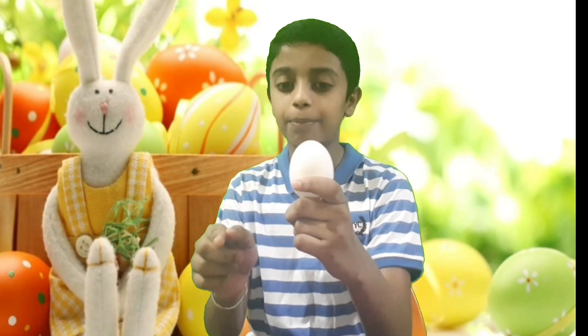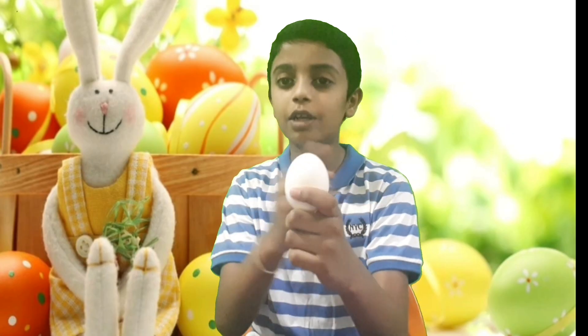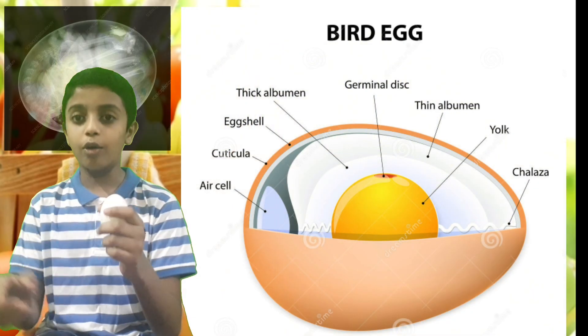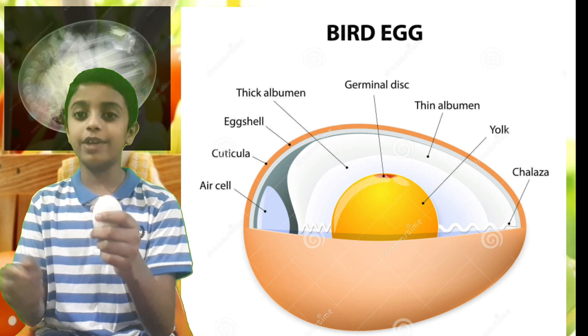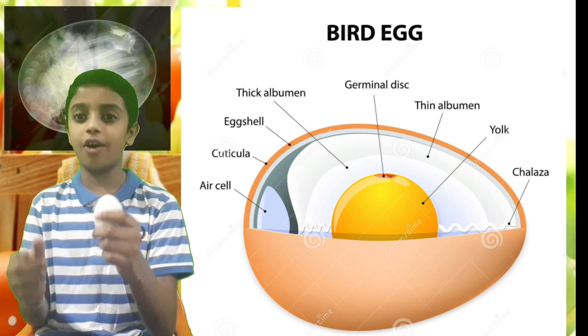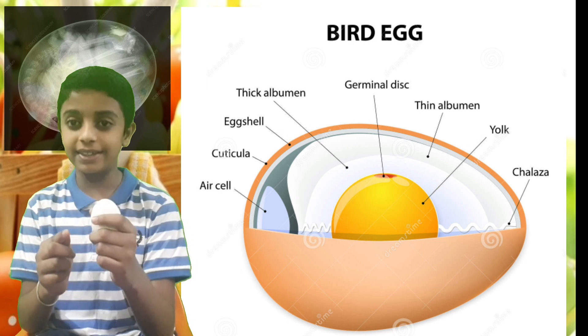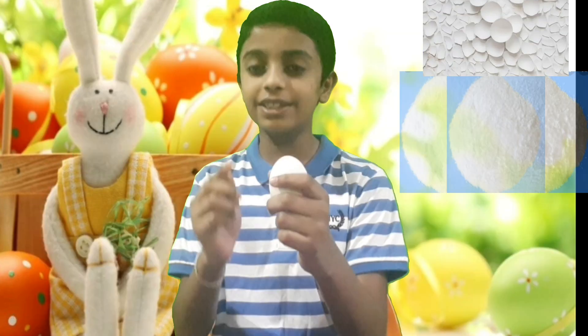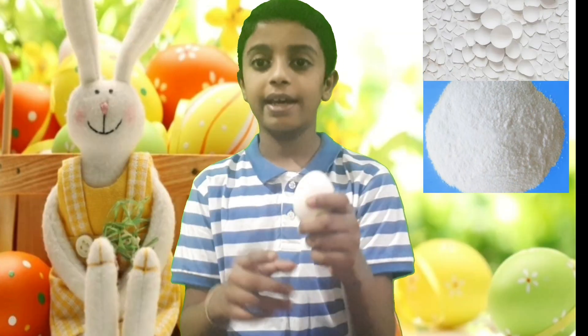Egg is made up of multiple components. The outer cover of the egg is called egg shell, which is made up of calcium carbonate.